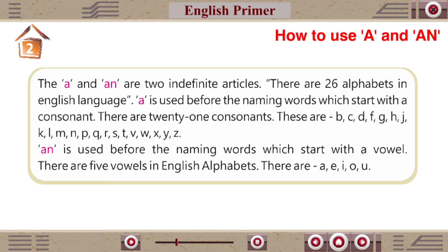The 21 consonants are: B, C, D, F, G, H, J, K, L, M, N, P, Q, R, S, T, V, W, X, Y, and Z. AN is used before naming words which start with a vowel.